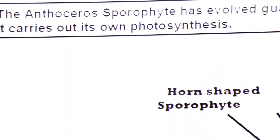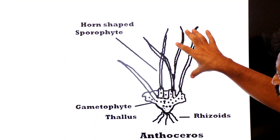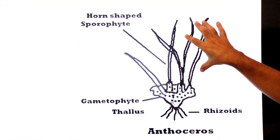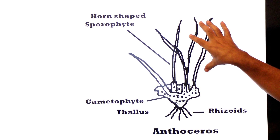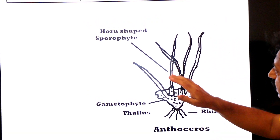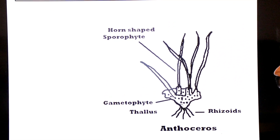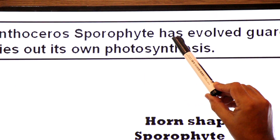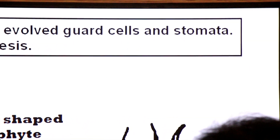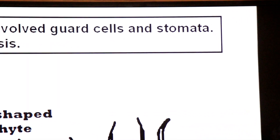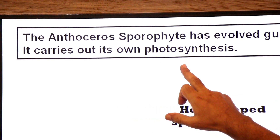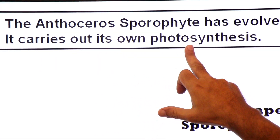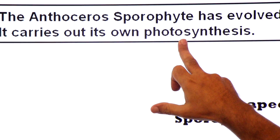The sporophyte of Class Anthocerotae is more advanced than the other two classes — evolution has occurred, resulting in advanced characters. The horn-shaped sporophyte of Anthoceros has evolved guard cells and stomata, and it carries out its own photosynthesis. The sporophyte has stomata to uptake carbon dioxide and has chloroplasts for photosynthesis.